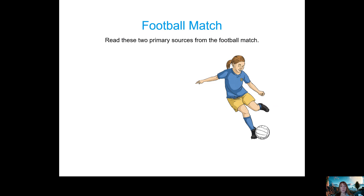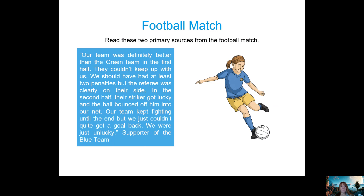Now I'm going to show you two primary sources from a football match — both are primary sources because they're accounts of the same football match. The first is from a blue team supporter: 'Our team was definitely better than the green team in the first half. They couldn't keep up with us. We should have had at least two penalties but the referee was clearly on their side. In the second half, their striker got lucky and the ball bounced off him into our net.'